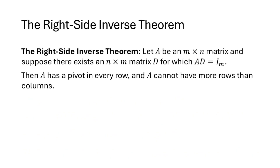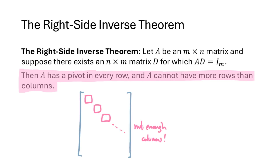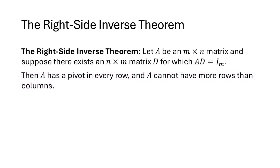We have a similar right-side inverse theorem, which tells us what happens when there is a matrix D for which A times D equals the identity matrix. In this case we conclude that A has a pivot in every row and therefore can't have more rows than columns. If we imagine a matrix taller than it is wide, we'd run out of columns before getting a pivot in every row. So having a pivot in every row means we can't have more rows than columns.